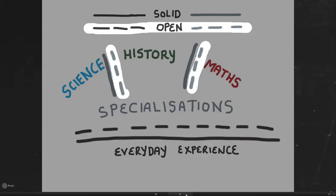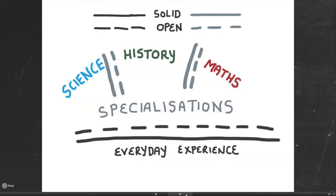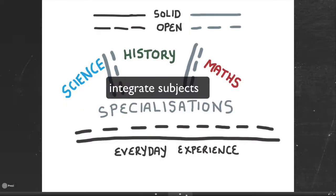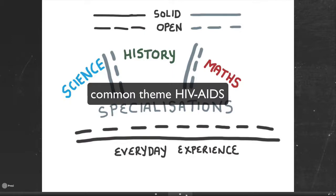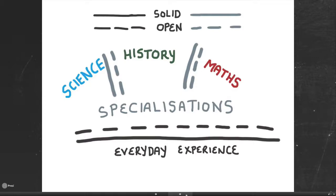An open line means integration between the different subjects, where teachers get together, choose a theme, and use different subjects to understand it. For example, if you're doing HIV/AIDS, you can do the science of HIV/AIDS, the history of HIV/AIDS, and some of the maths of the infections — how it's been fought through tracking the number of infections.